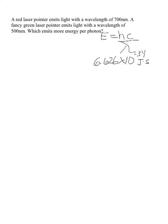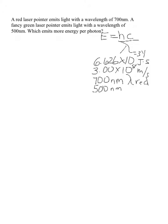C, as we said in the previous video, is the speed of light, which is a constant — 3.00 times 10 to the eighth meters per second. The wavelengths are given to us in the problem: 700 nanometers for the red and 500 nanometers for the green.